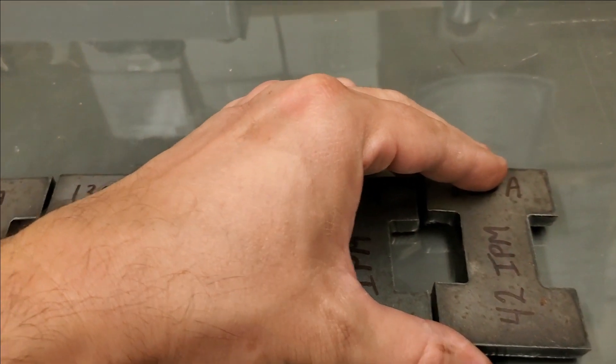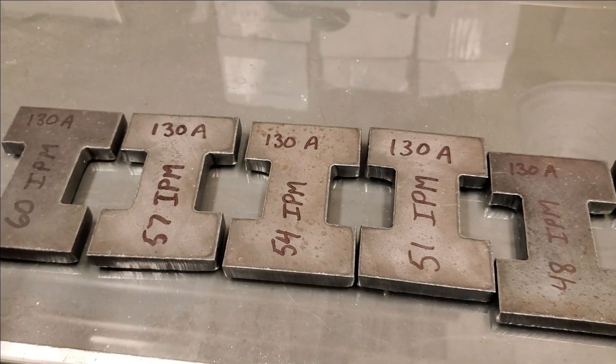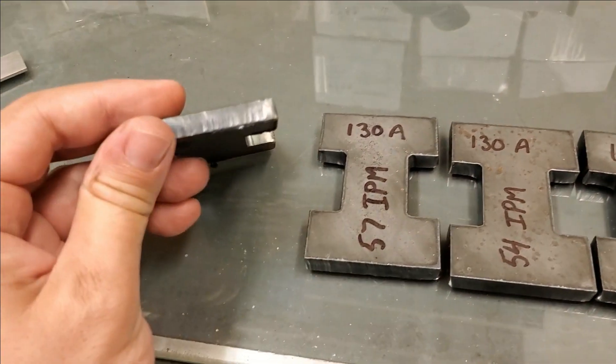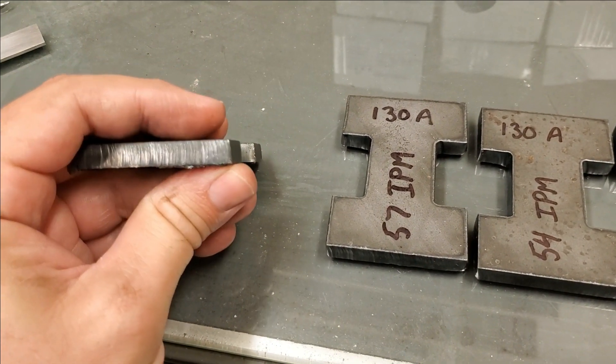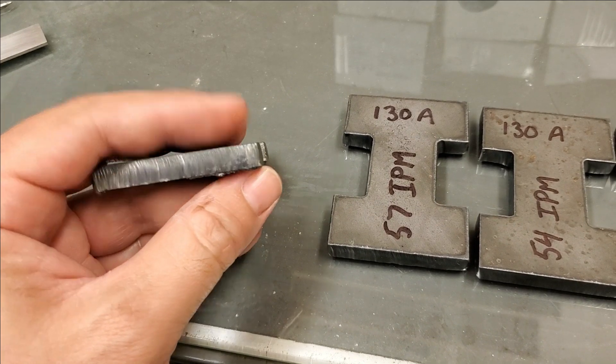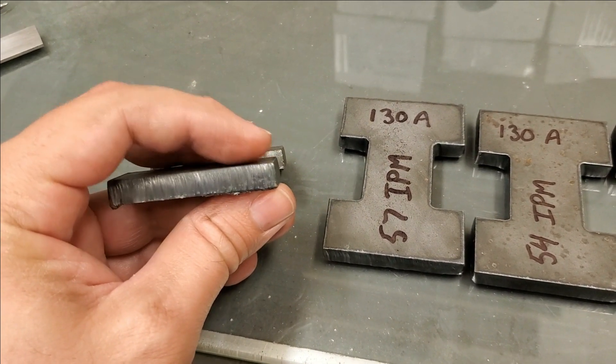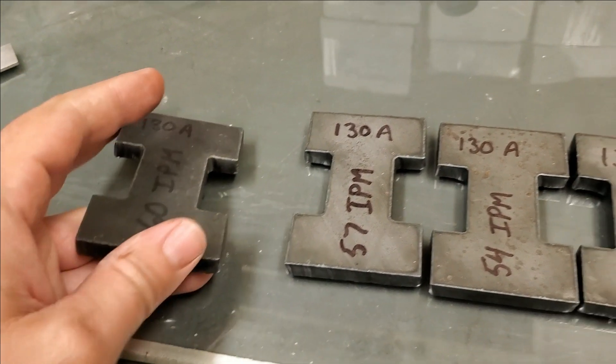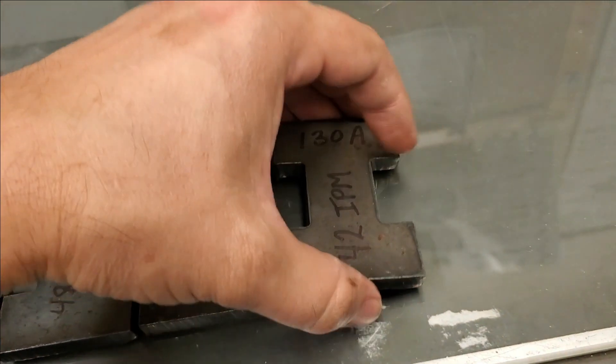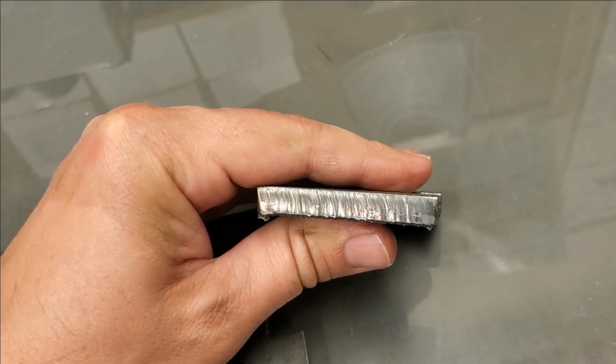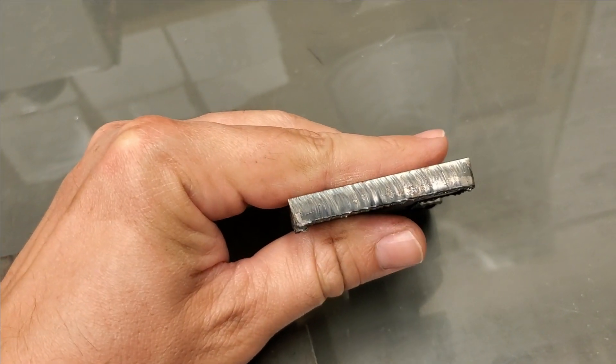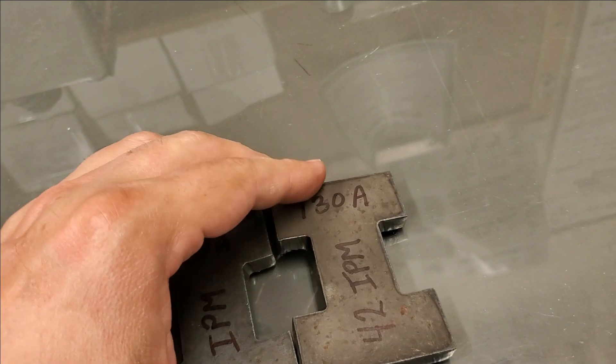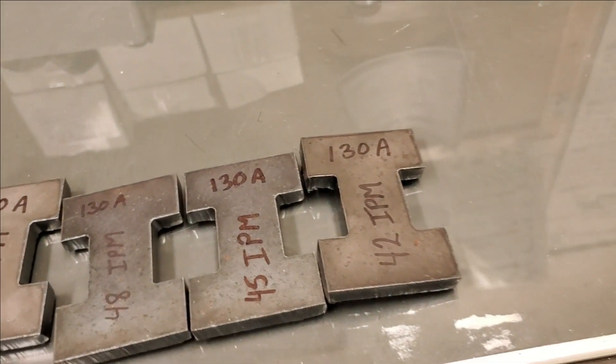Slowing down the feed rate does affect the dimensional accuracy a little bit, but actually it improves it with all this draft. This is about 10 thousandths oversized on the bottom but it's about 40 thousandths undersized on the top with that angle, whereas way down here it's actually pretty steady. We've got about a 10 to 15 thousandths of an inch range on the cut.